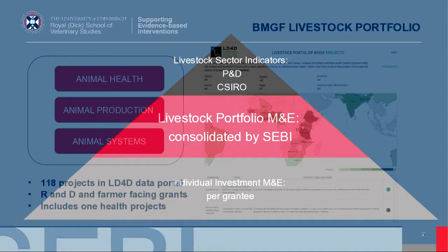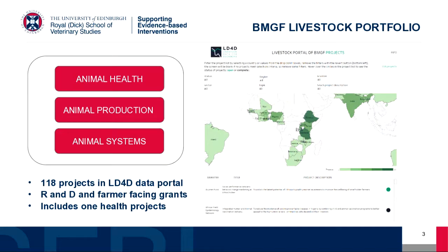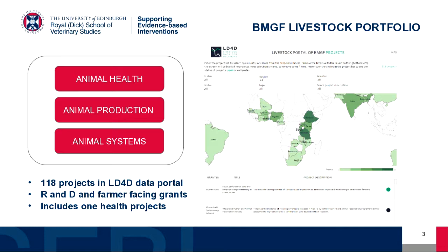The actual livestock portfolio — this is some of the work we've been doing as LD4D: mapping projects funded by the foundation. There are over 100 livestock projects, divided into three sectors: animal health, adoption, and animal systems. They're a mixture of R&D and pharma-facing projects. The very first phase is working with five grantees — pharma-facing grants to animal health: GALVMed and SIDAI, who are both here. Likewise, animal production: ACGG and ADGG — chicken genetic gains and dairy genetic gains projects — and Lander Lakes, all represented here today. There's wide geographical coverage, orange being animal health and green being animal production.